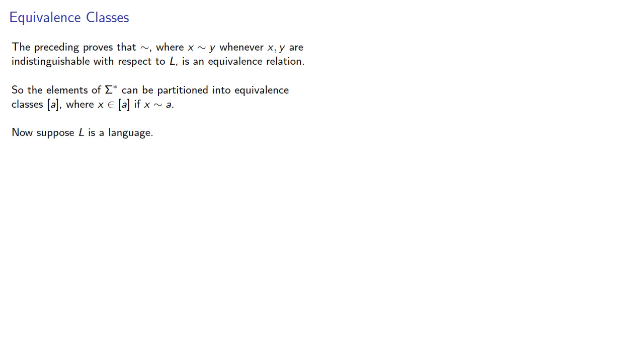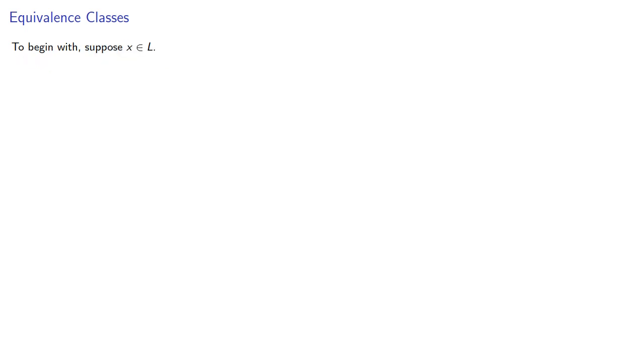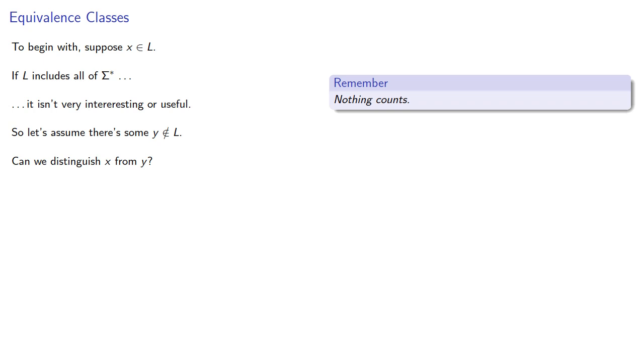Now suppose L is a language. What do the equivalence classes look like? To begin with, suppose X is in our language. If L includes all strings, it isn't very interesting or useful. So let's assume there's some Y that's not part of our language. Can we distinguish X from Y? Remember, nothing counts. Since the empty string is a string, what happens if we concatenate with the empty string?